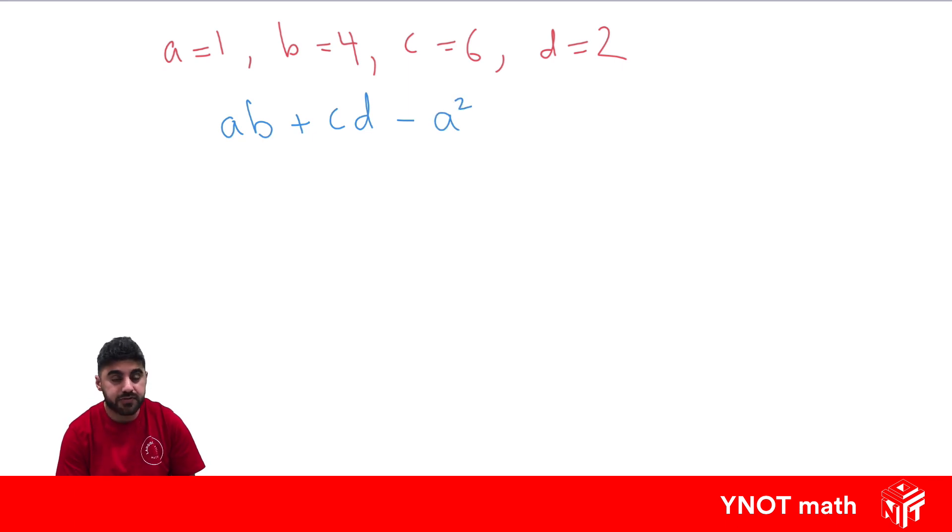Well, when we do substitution, it's very important you should make all your substitutions first. So a is equal to 1. Now, when we have ab, remember this means a times b. So it's going to be 1 times b, which we know is equal to 4, plus c, which we know is equal to 6, and cd is going to mean c times d, because when they're written next to each other, it means times. So we know d is equal to 2 minus a, which is equal to 1 squared.